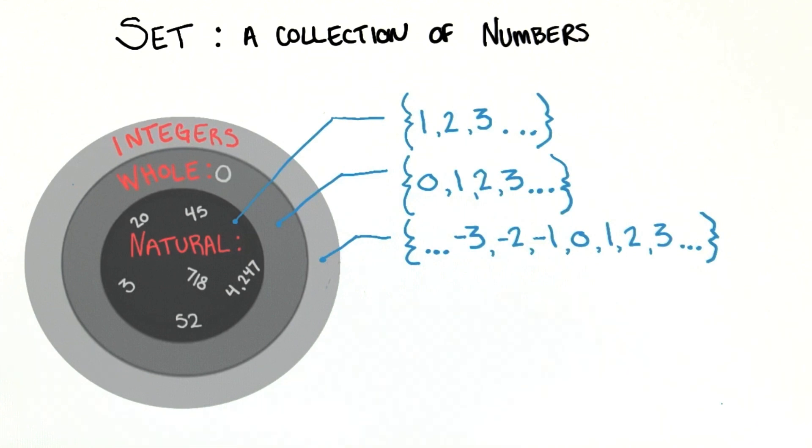So for example, the set negative 4, 7, 19 is a set. And so is negative 38, 56, 100.5, as is 9.